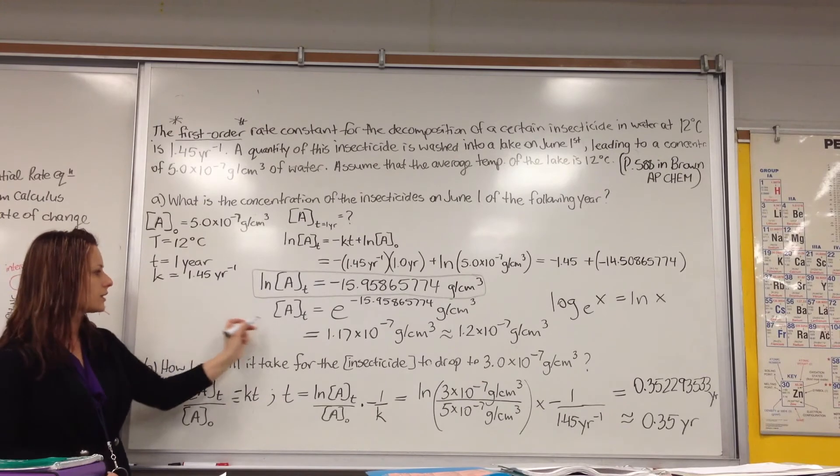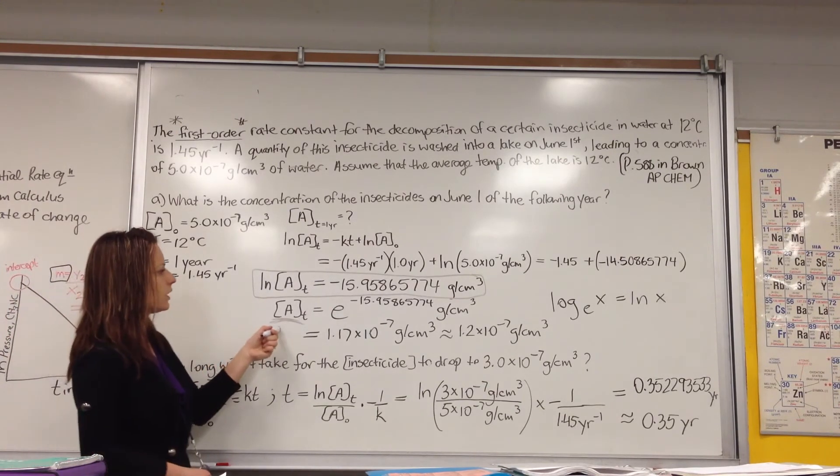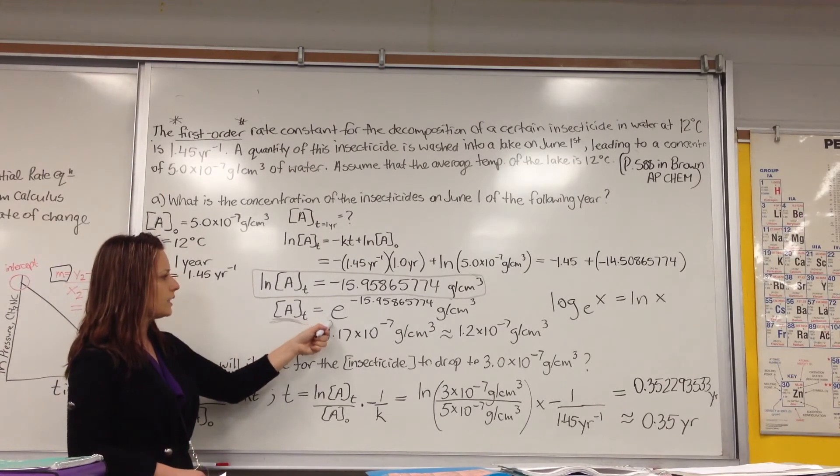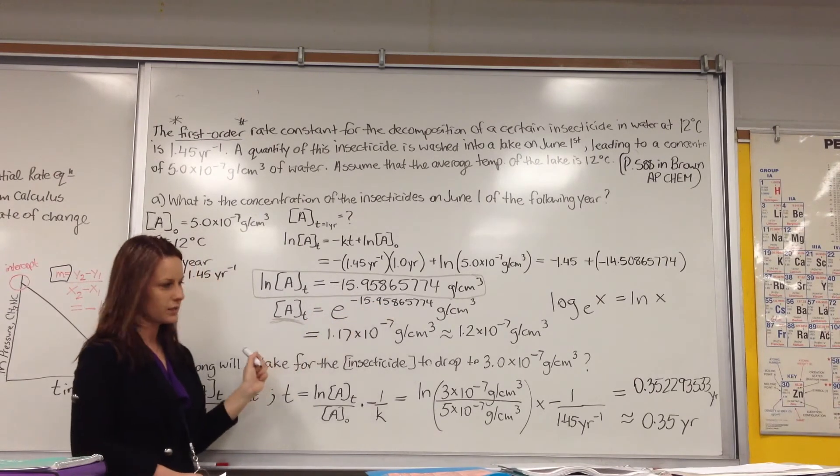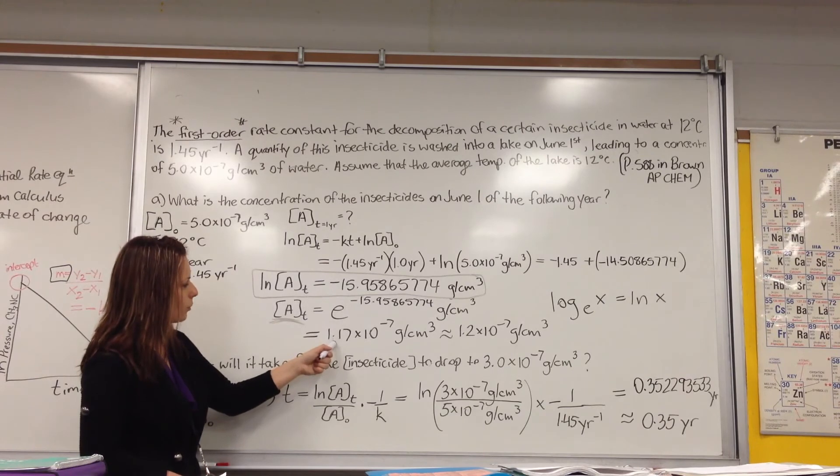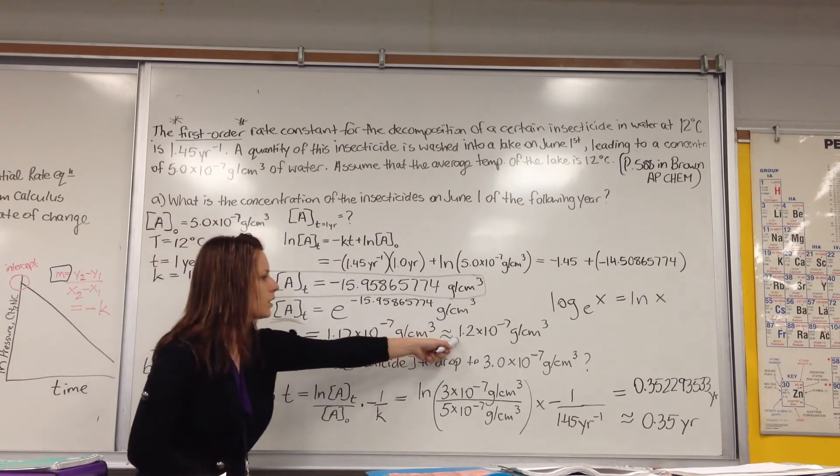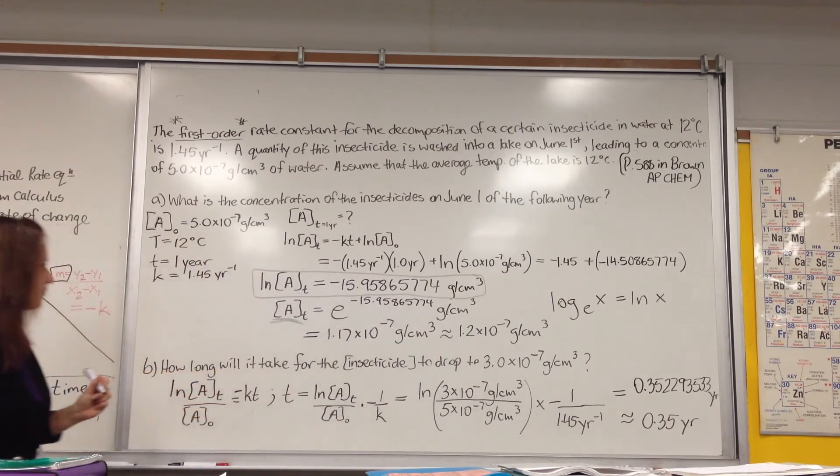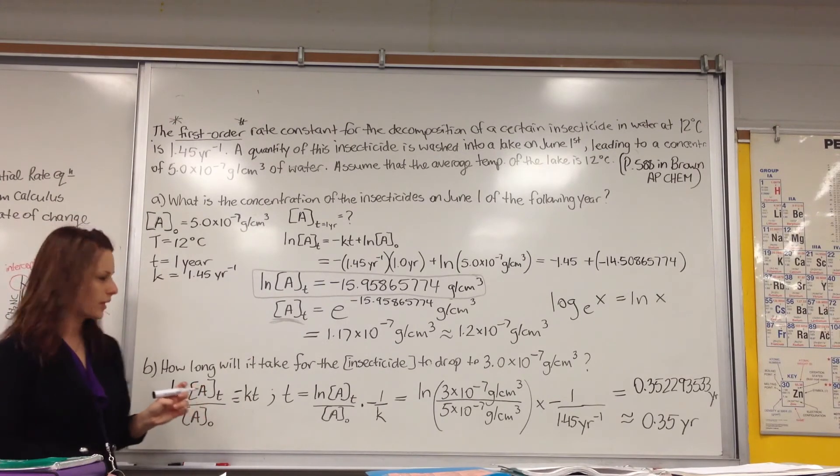What you have to do, you have to do the inverse ln to actually give you A at time T. So when we do the inverse, because ln is a natural logarithm, we take E to the power of negative 15.958, which we end up getting approximately 1.17 times 10 to the negative 7 grams per centimeter cubed. Round off using appropriate sig figs, and you get 1.2 times 10 to the negative 7 grams per centimeter cubed.